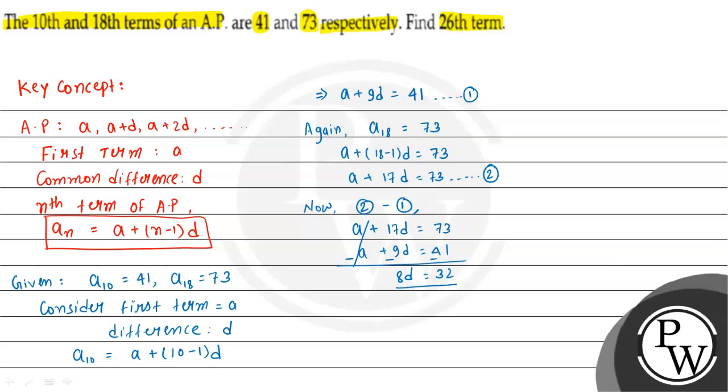So 8d equals 32, which means d equals 4. We have found the value of d. Now we will use equation 1 to find the value of a.